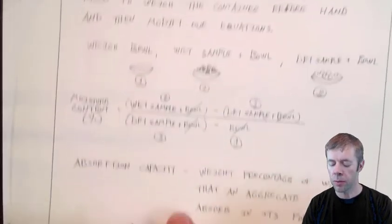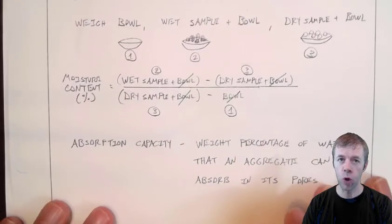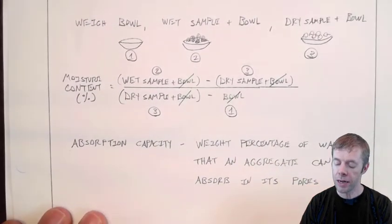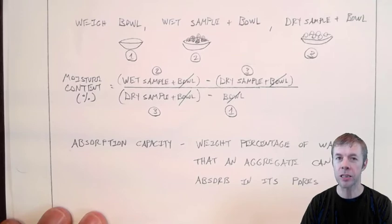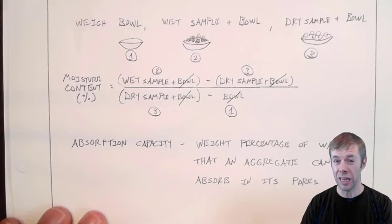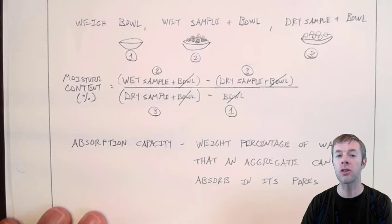There's another number that's really important — it's called the absorption capacity. It's the weight percentage of water that an aggregate can possibly absorb in its pores, not on the outside, just inside the pores. This is a number that you need before you can start doing the moisture correction. Watch the other video if you've forgotten how to get it.